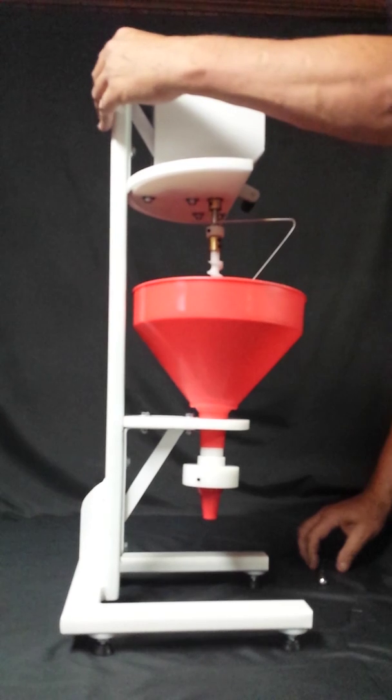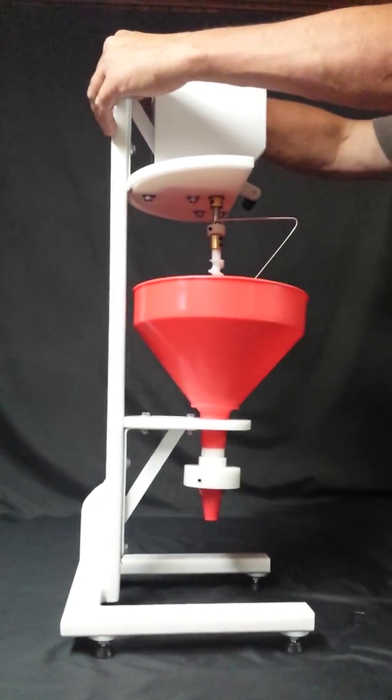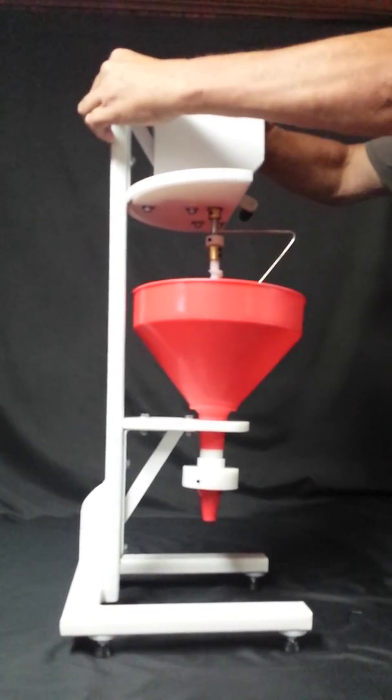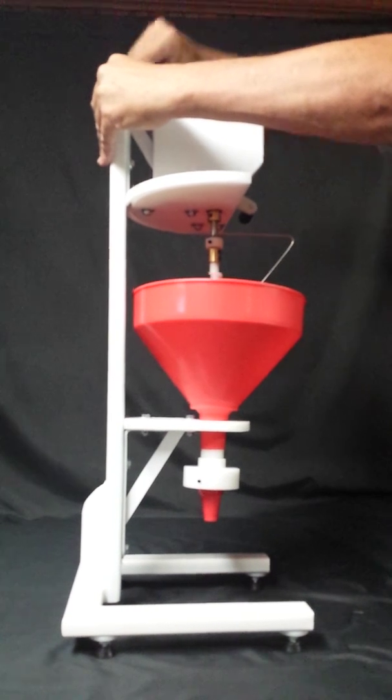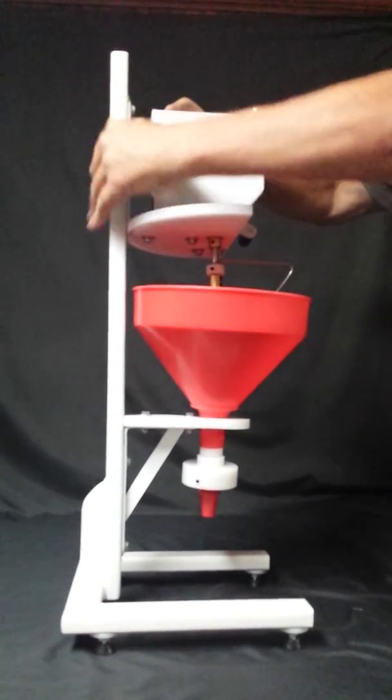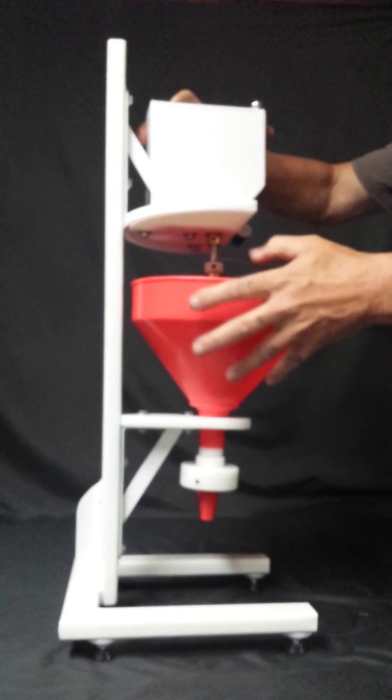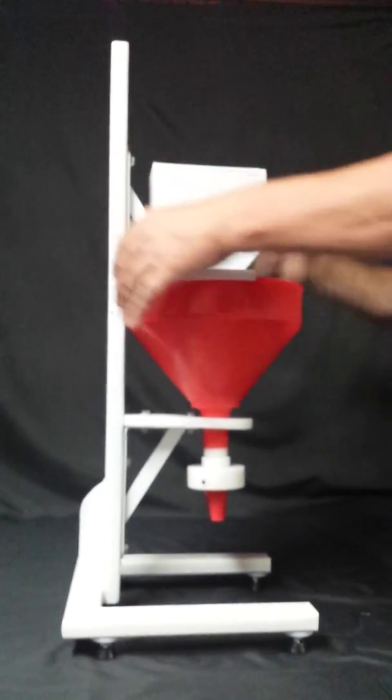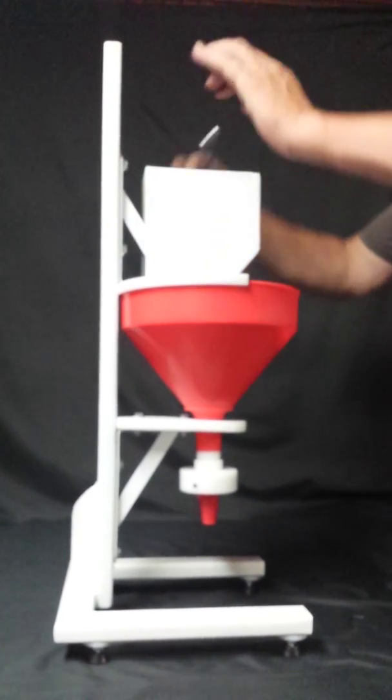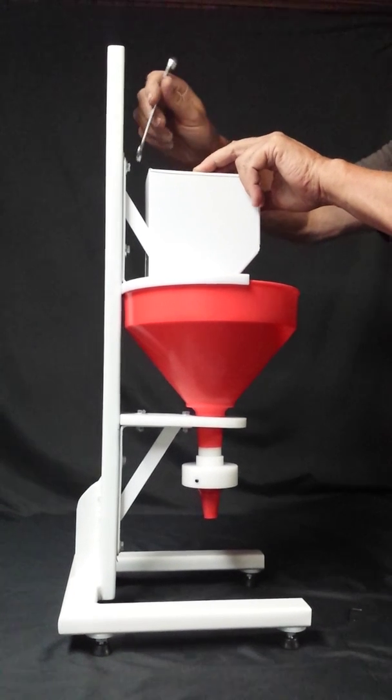Now I can loosen this one bolt on the top again and set this back down on top. Lining the auger up. Everything just lines right up here. Set this down on top. Tighten this back up.